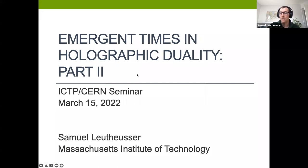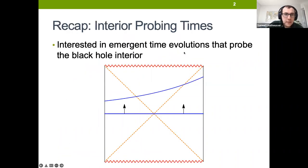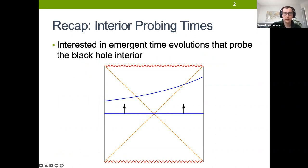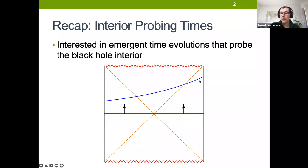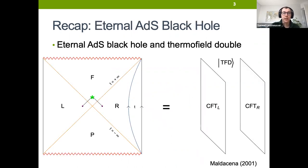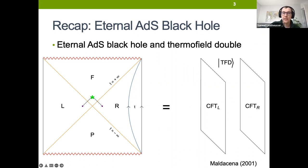I'll just recap a little bit of what he talked about before going into what we'll discuss today. The main issue we're interested in understanding is these bulk time evolutions. We're interested in understanding from a boundary perspective how to describe a bulk time evolution that takes some Cauchy slice through the bifurcation surface to another slice that probes the interior of the black hole. The simplest setup to study this is the eternal ADS black hole, which is conjectured to be dual to two copies of the CFT in the thermal field double state.